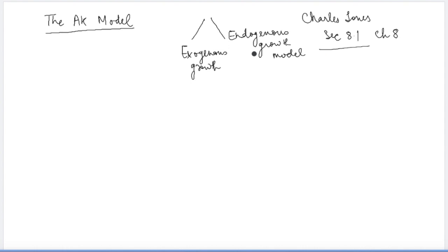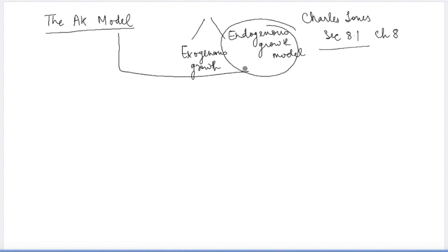The AK model is a very simple example of the endogenous growth model category. Endogenous growth model means that one variable already defined in the model is responsible for the long-run growth of output in the economy.